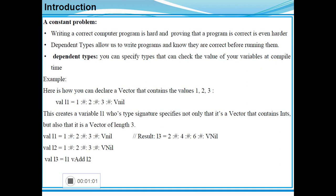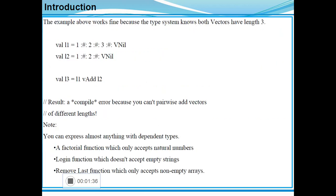val l1 = 1 :: 2 :: 3 :: VNil. This creates a variable l1 whose type signature specifies not only that it's a Vector of data type int, but also that it is a Vector of length 3. Similarly, vector l2 is also declared. Using these two vectors, if you apply an arithmetic operation like l3 = l1 + l2, each vector element in one vector is added with another vector element. Finally you will get the addition of the two vectors such as l3 = 2 :: 4 :: 6 :: VNil.